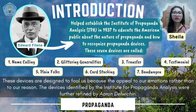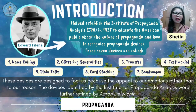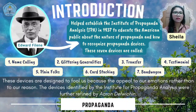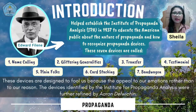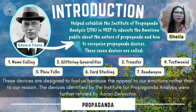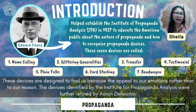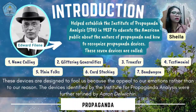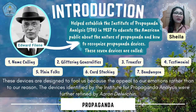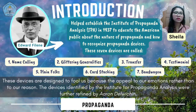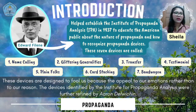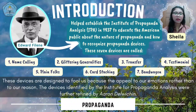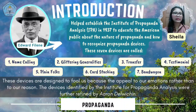As you can see in this slide, one of the famous figures around propaganda is Edward Villard. He helped establish the Institute of Propaganda Analysis in 1937 to educate the American public about the nature of propaganda and how to recognize propaganda devices. Villard and his colleagues identified the seven most common tricks used by successful propagandists. These seven devices are called name-calling, glittering generalities, transfer, testimonial, plain folks, card stacking, and bandwagon. These devices are designed to fool us because they appeal to our emotions rather than to our reason. Our group will only explain three of these seven devices.